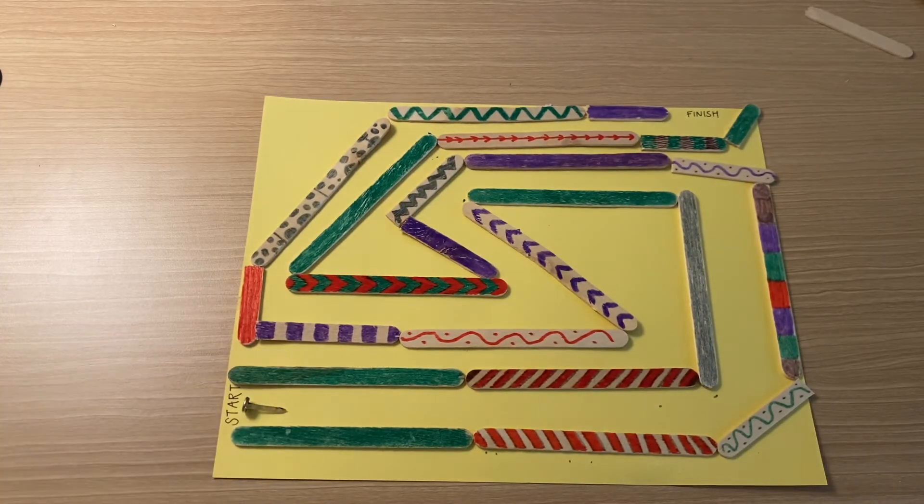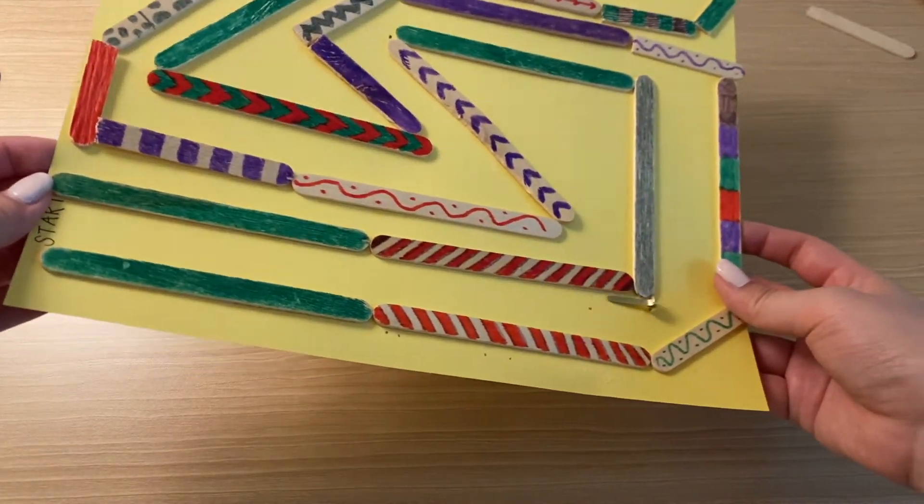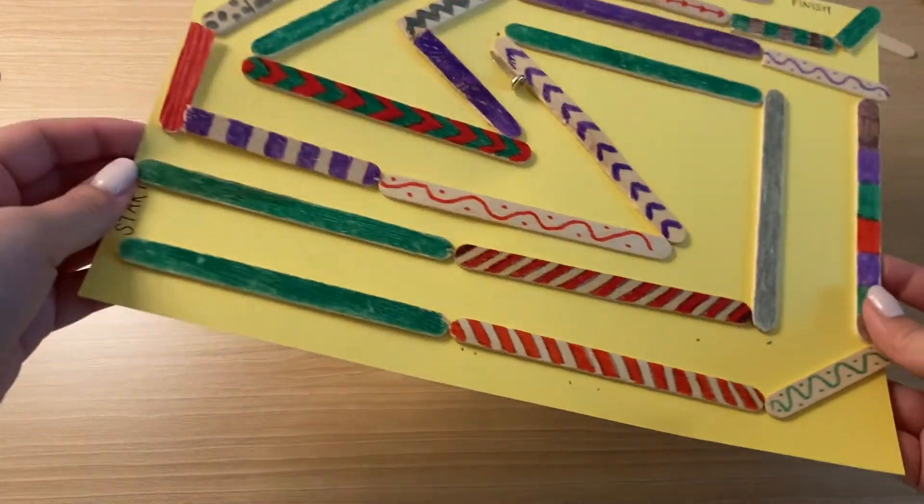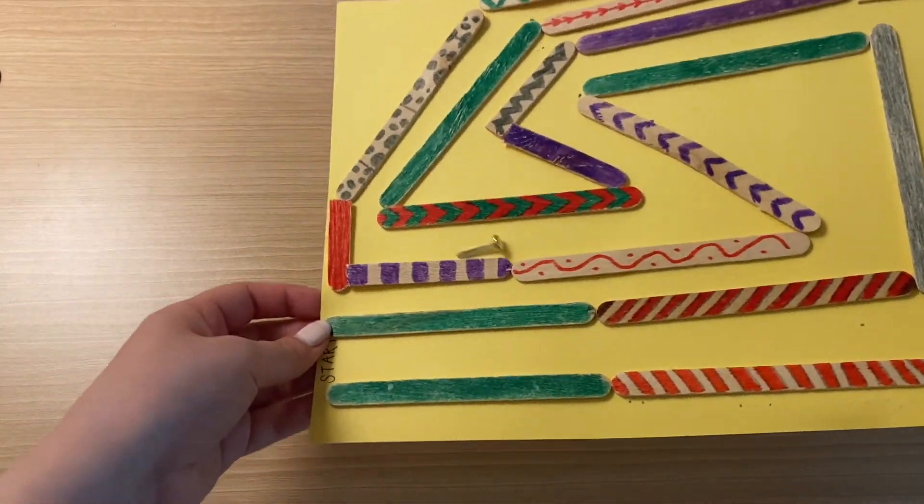If you do not have a magnet, an alternative is to slide the paper fastener by moving around the maze itself, like so.